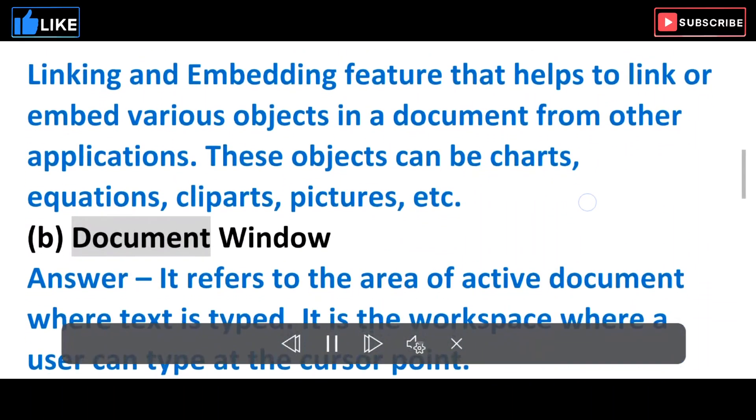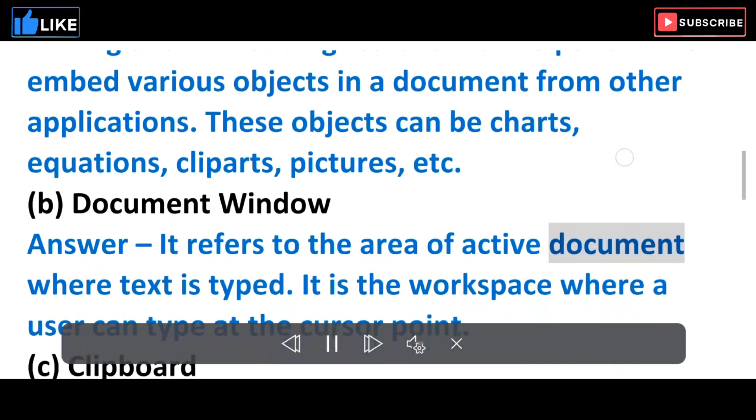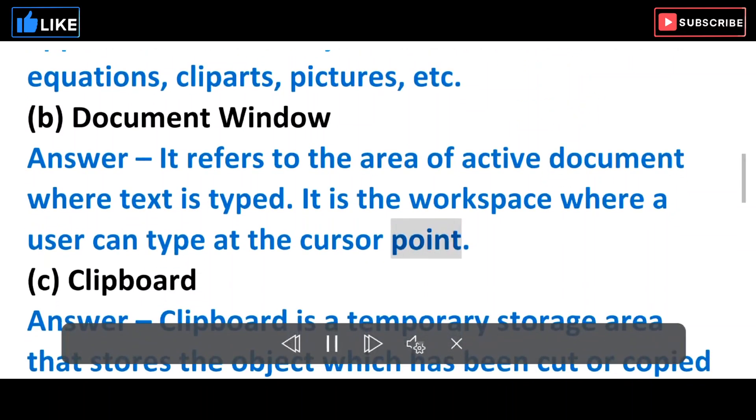B. Document window. Answer: It refers to the area of active document where text is typed. It is the workspace where a user can type at the cursor point.